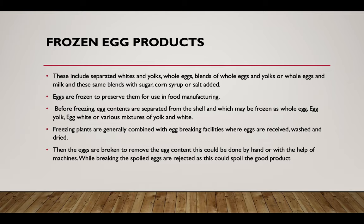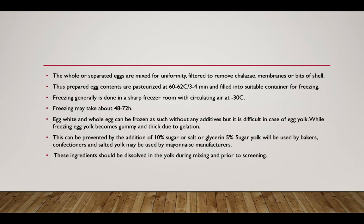Before freezing, egg contents are separated from the shell, then frozen as whole egg, egg yolk, egg white, or various mixtures of yolk and white. Freezing plants are generally combined with egg breaking facilities where eggs are received, washed, and dried. Eggs are then broken to remove the egg content, which can be done by hand or by machine. Broken spoiled eggs are rejected as they could spoil product quality. The whole or separated eggs are mixed for uniformity, filtered to remove chalazae or bits of shell.